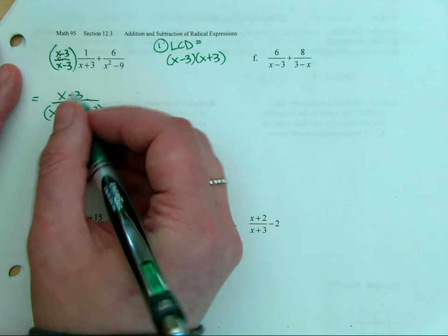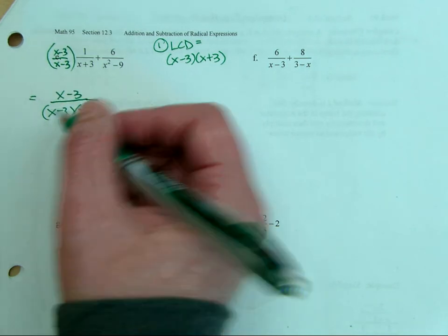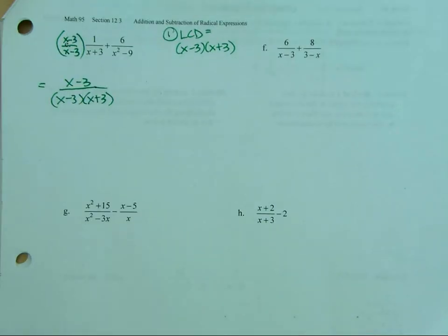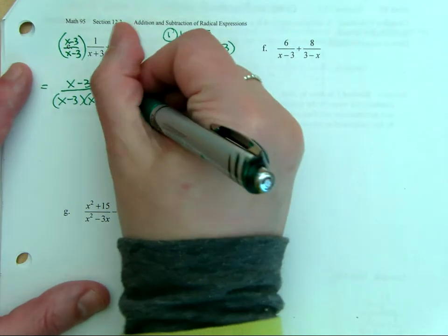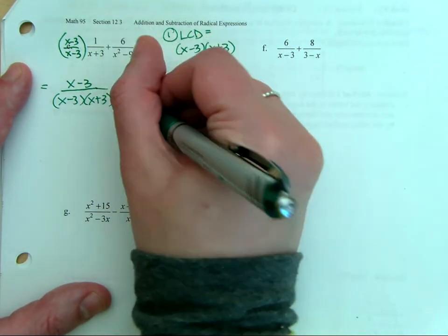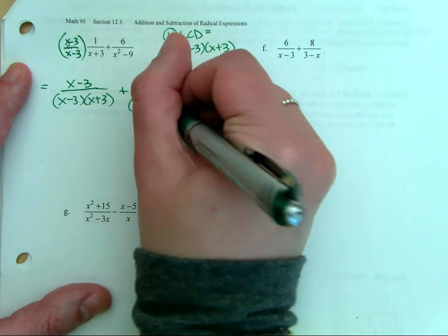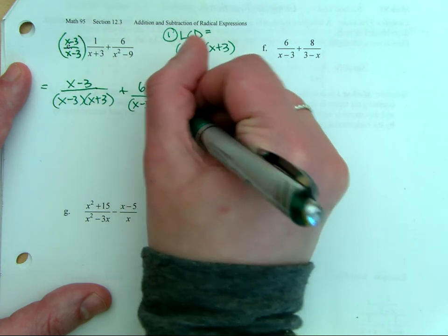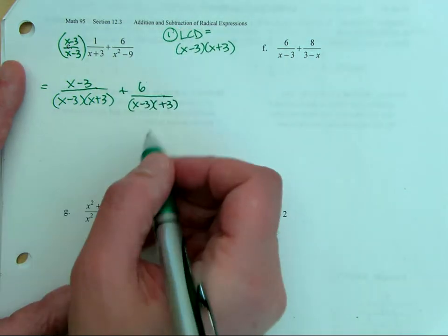Should I go ahead and reduce that? Should I cancel that out? No — why wouldn't I want to cancel it? The whole point is I put it there in order to have a common denominator. So then here I have plus six over — and you can write it either way, factored or foiled, but it's easier to see that it's a common denominator if you leave it factored.